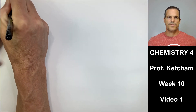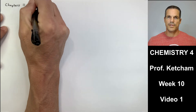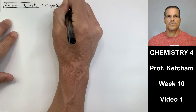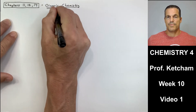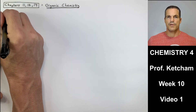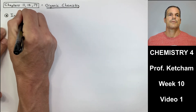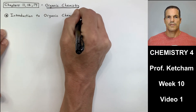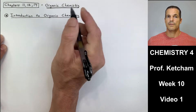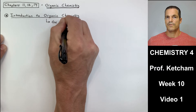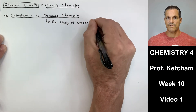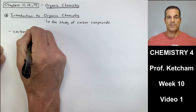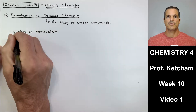Okay guys, so we're back with week 10. This is Chem 4, week 10, video number one. This is the beginning of the organic chemistry part of the course — the middle third of the GOB course. We're going to focus this week on chapter 11, next week on chapter 12, and then skip chapter 13 and come back to it later. So we're doing chapters 11, 12, and 14 in the next three weeks to cover our organic chemistry portion.